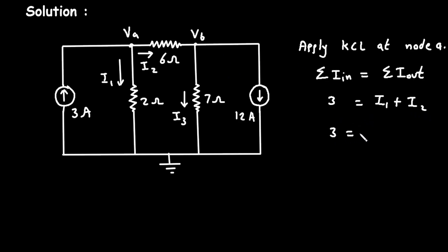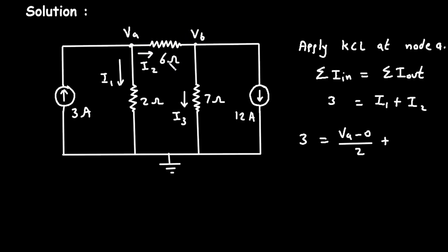So 3 is equal to: we can write I1 as VA minus 0 divided by 2, then plus this I2 can be written as VA minus VB, because the current is going from VA to VB, so VA minus VB divided by 6. This is the simple Ohm's law — current is equal to voltage divided by resistance.